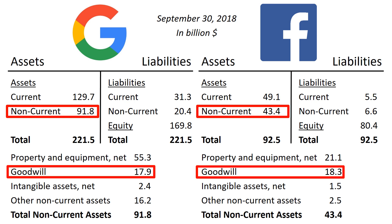What jumps out here is that both companies have around $18 billion dollars in Goodwill, which is related to acquisitions done in the past. Goodwill is the excess of the purchase price paid for an acquired firm over the fair value of its separately identifiable net assets. In absolute terms, this is a similar amount for both companies, but in relative terms compared to the balance sheet total, this is a much bigger item for Facebook.